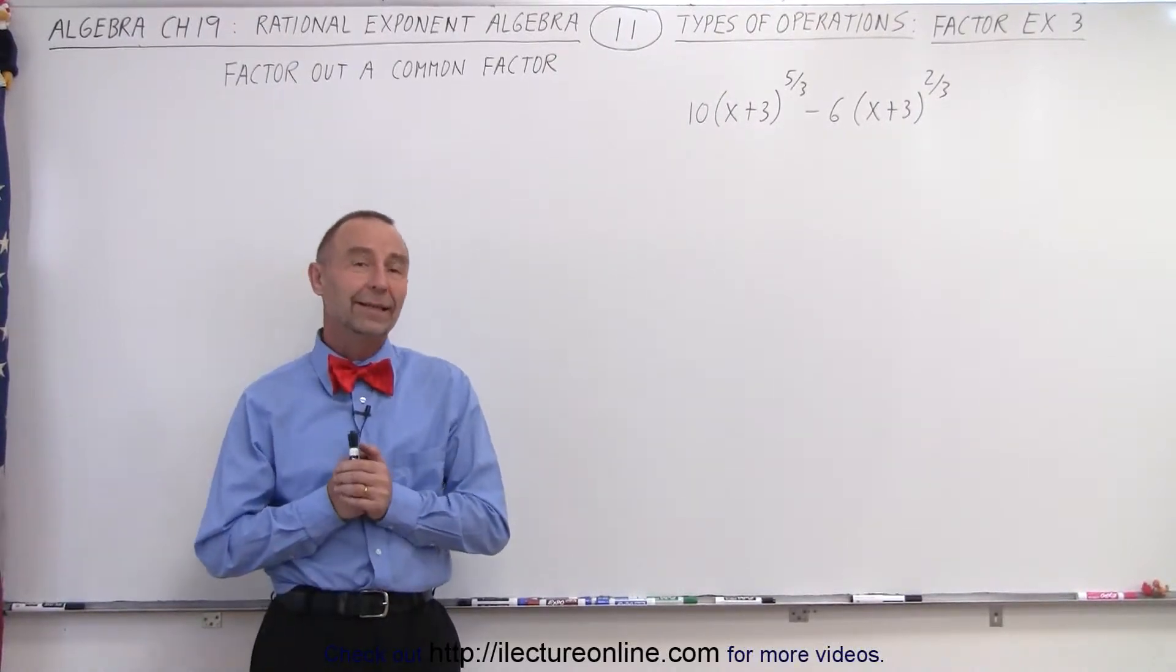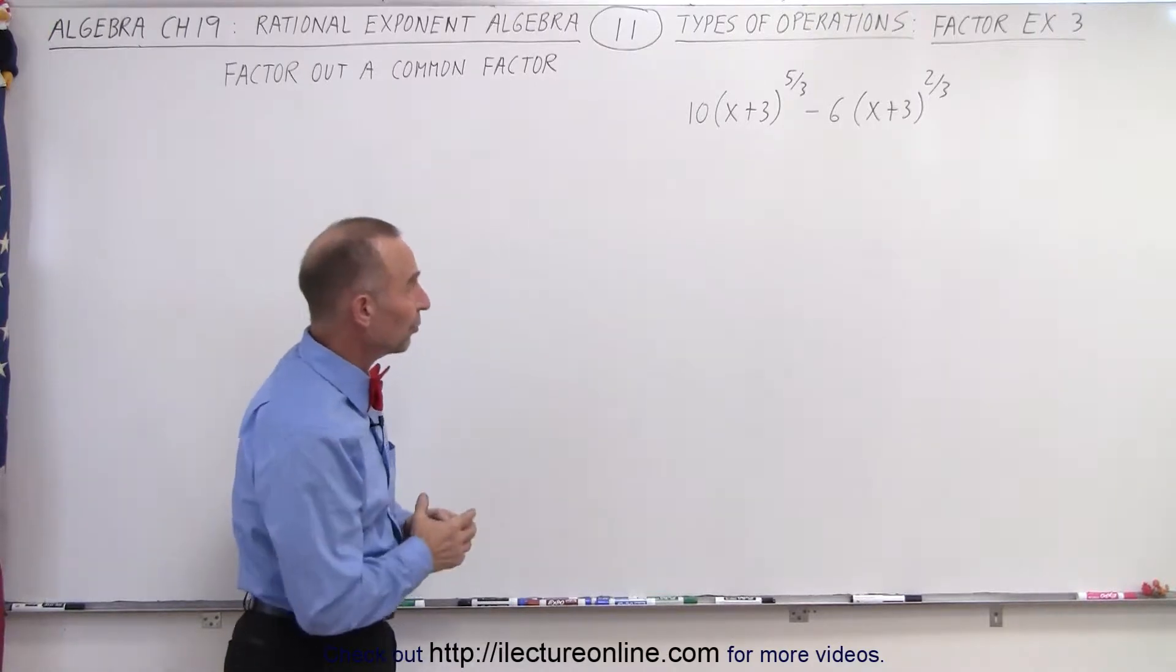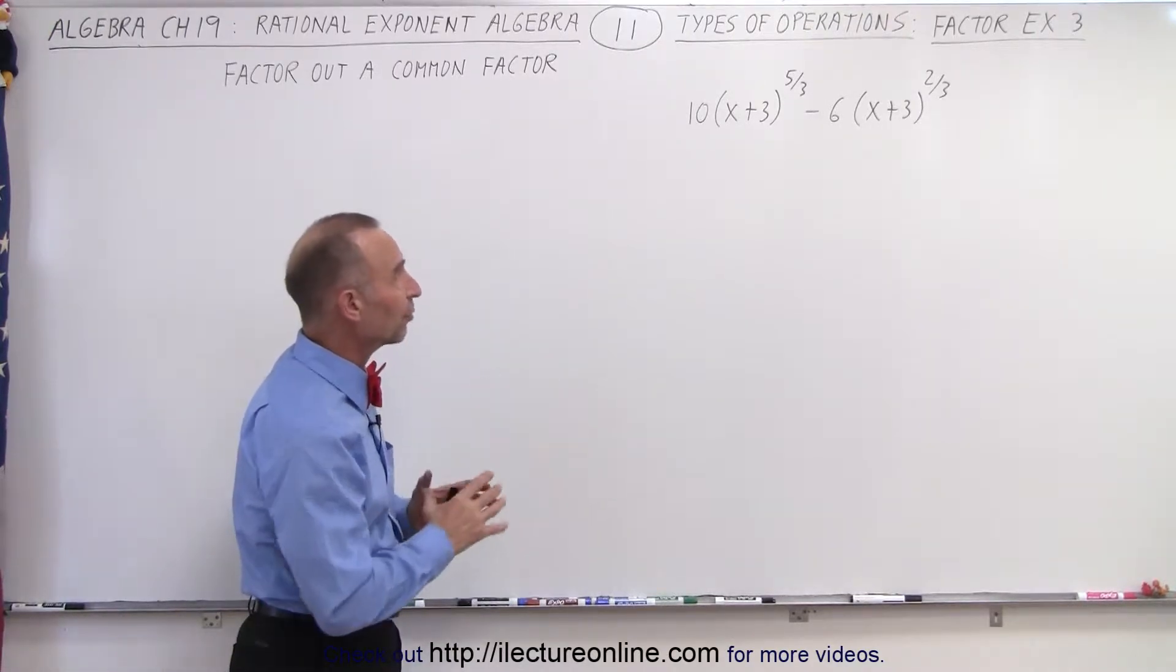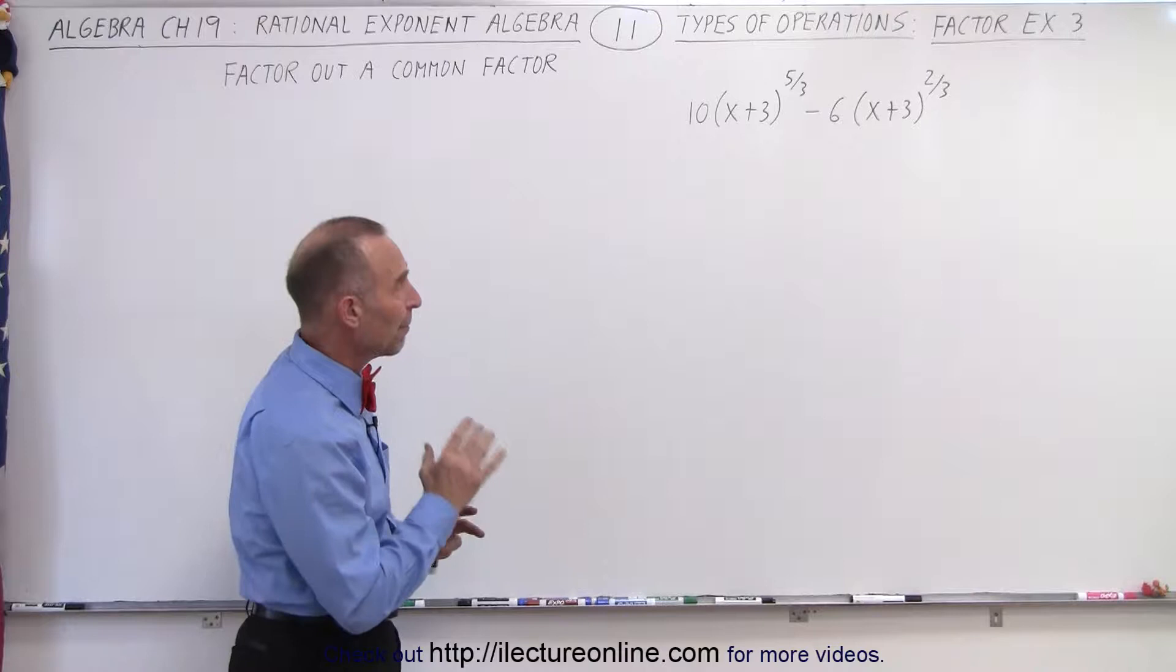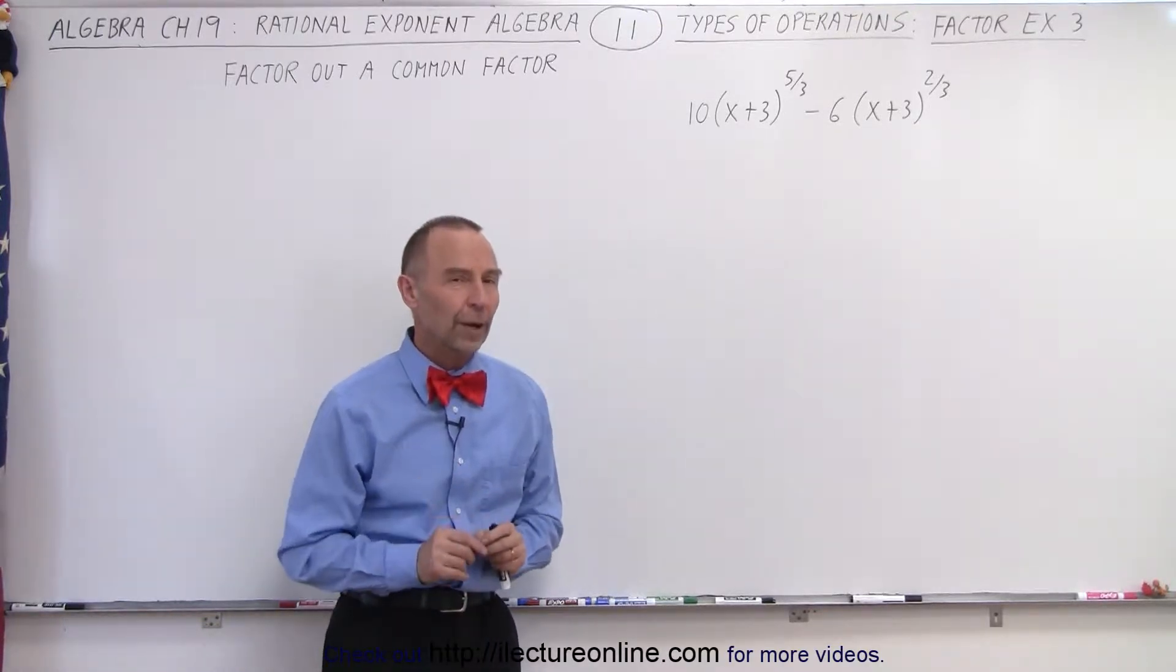Welcome to Electronline. Now for something new when it comes to factoring. Notice this expression: 10(x+3)^(5/3) - 6(x+3)^(2/3).